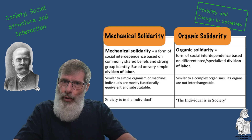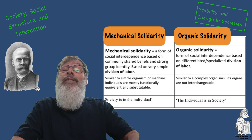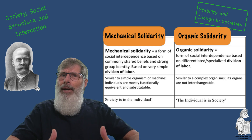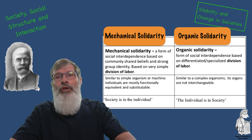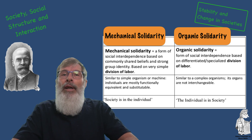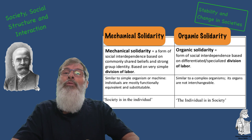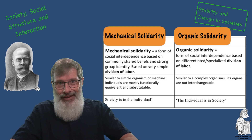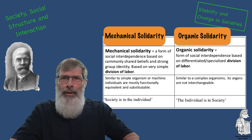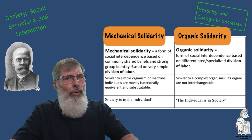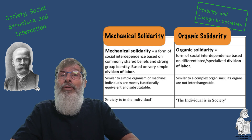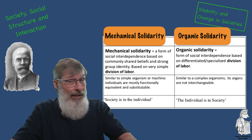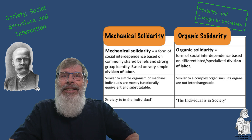Organic solidarity is the social cohesion found in industrial societies, in which people perform very specialized tasks and feel united by their mutual dependence. Durkheim chose the term 'organic' because individuals in an industrial society come to rely on one another much as the organs of the human body function interdependently. Social interaction becomes less personal, more status-oriented, and more focused on specific goals and objectives. People no longer relied on shared morality or values for social solidarity; instead, they are bound together by practical considerations.